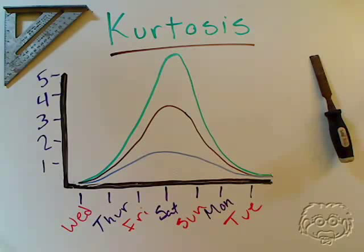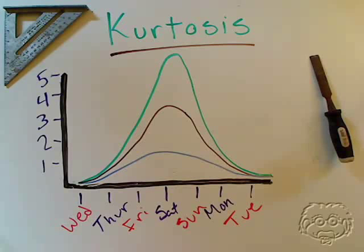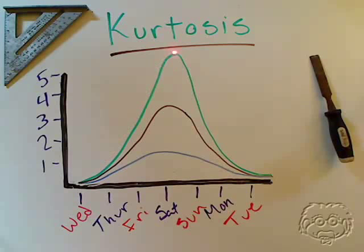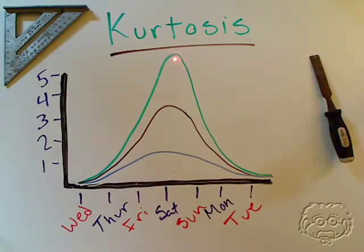Data sets with high kurtosis tend to have distinct peaks near the mean, and decline rather sharply, and they also have heavy tails. Our curve here in green really fits that category — we have some long tails, a sharp curve, a sharp peak, and then a rapid decline.